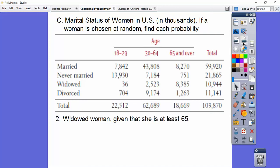Here's another one. What's the probability that it's a widowed woman given that she's at least 65? So here's 65 and older. So we're in this one right here. And the widowed is this one. So it's those two numbers that we're going to do right there. And we get about 449 thousandths, 0.449.